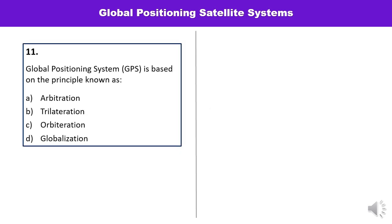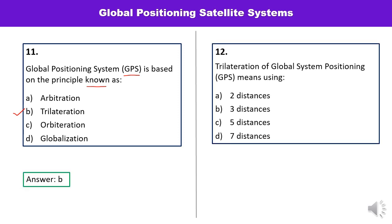Question number eleven: GPS is based on which particular principle? The answer is trilateration. Question number twelve: The trilateration technique used in GPS — how many distances does it use? Two, three, five, or seven? It uses three distances, so B is the correct answer.